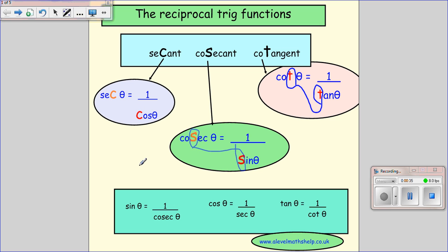You can obviously flip all of these, and then you get sine theta is one over cosec theta, cos theta is one over sec theta, and tan theta is one over cot theta.